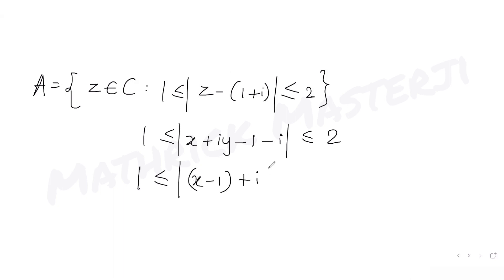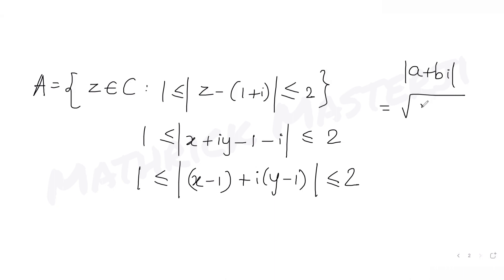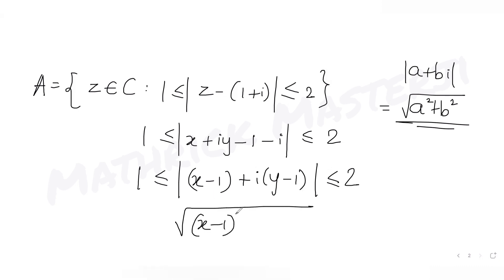So we have 1 ≤ mod of (x - 1) + i(y - 1) ≤ 2. Since mod of (a + bi) = √(a² + b²), this becomes 1 ≤ √[(x - 1)² + (y - 1)²] ≤ 2.